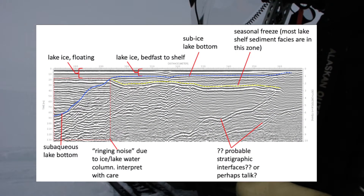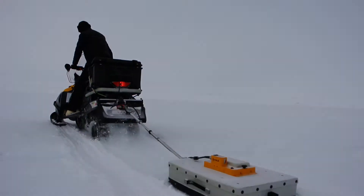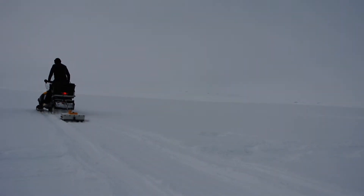In this annotated radargram, you can see the floating ice on the left side, particularly characterized by a ringing of the GPR signal due to multiple reflections between the air, ice, and water interfaces. On the right side, you can see where the lake is much shallower and the ice is frozen solid to the underlying sandy shelf near the lake edge. We also see evidence of a seasonal freeze in the sub-lake sediments. There are also some reflections that are difficult to conclusively identify in the bottom right of the image — these may be sedimentary layers or they might be related to a perennial thawed zone, also known as talik.